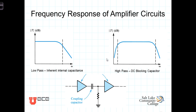All electrical devices and circuits have inherent, finite capacitance associated with them. Generally, this capacitance is small and has a relatively negligible effect over a wide range of frequencies. But at high frequencies, this capacitive impedance — Z_C is equal to 1 over jωC — becomes significant.